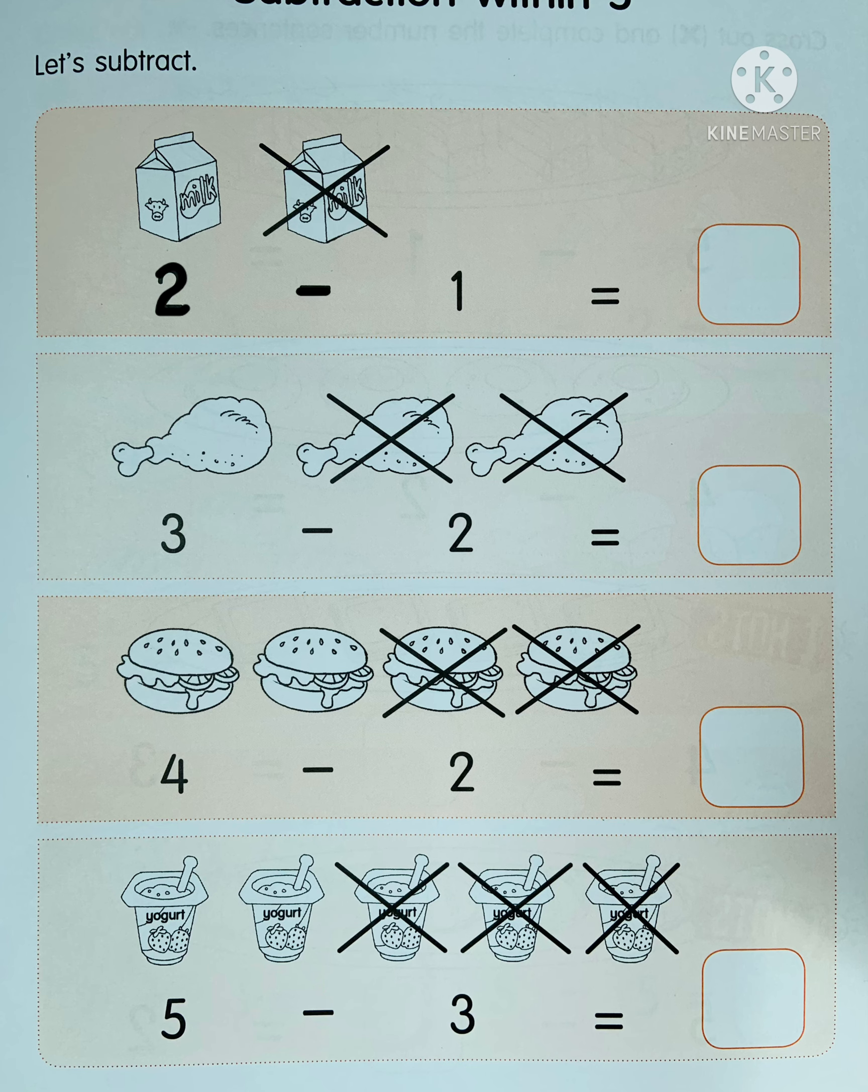Two bottles of milk minus one bottle of milk equals how many? We have to take away one bottle of milk by crossing it out. Now how much is left? We have one bottle of milk left, right? Number one on the box.